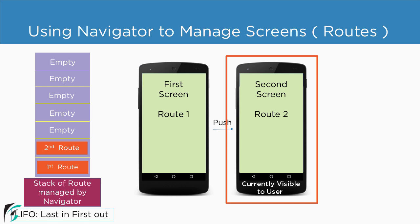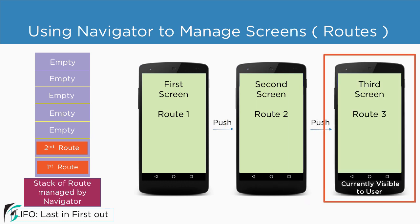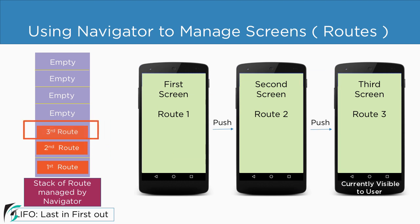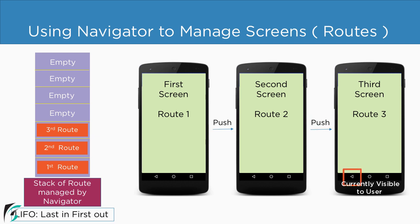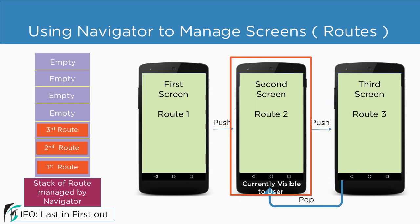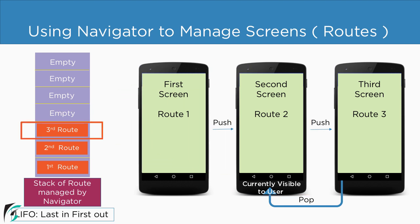Again, from route two we move to route three — our third screen — so the third route will be added to the stack and will be visible to the user. Whenever we push a route to the stack we perform the push operation. Now suppose the user presses the back button; in that case they will navigate back to route two and we will perform the pop operation.